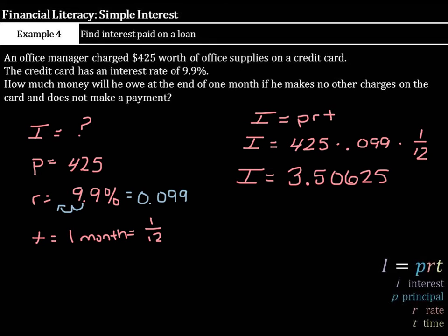Now, that's the interest being charged. We have to add this back to the principal to see how much money he will owe, because he has to pay the $425 and the interest. So, $425 and no cents, plus $3, 50 cents with this little bit of extra hanging out. It's going to equal $428, 50 cents, and this extra.